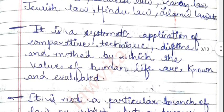Second characteristic: it is a systematic application of comparative technique, discipline, and method by which the values of human life are known and evaluated. This is a systematic application of comparative techniques, comparative methods, and comparative principles from which the value of human life is being evaluated, because in comparative law we have different techniques and methods to derive studies.